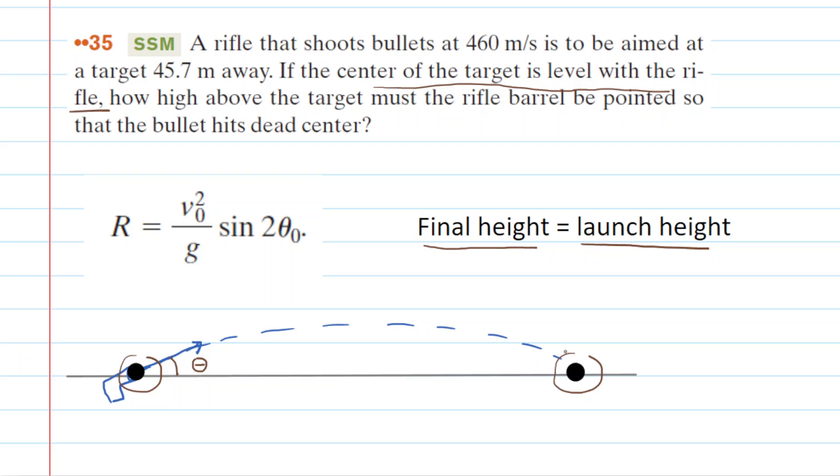They are level with one another, so that means the final height of the bullet's position will equal the launch height of the bullet. When that is true, we can greatly simplify the calculation by using the range equation, this equation here.